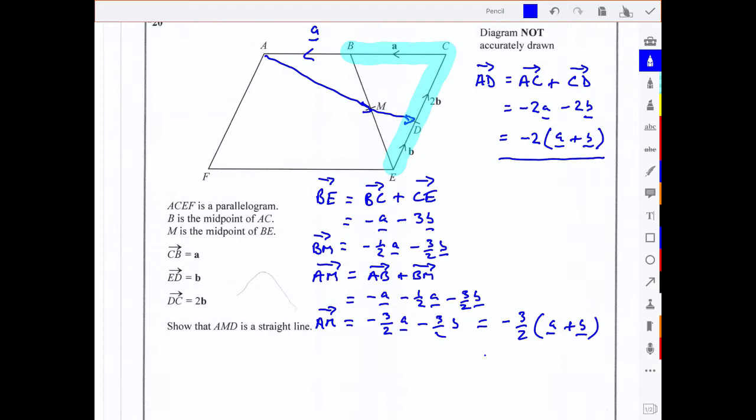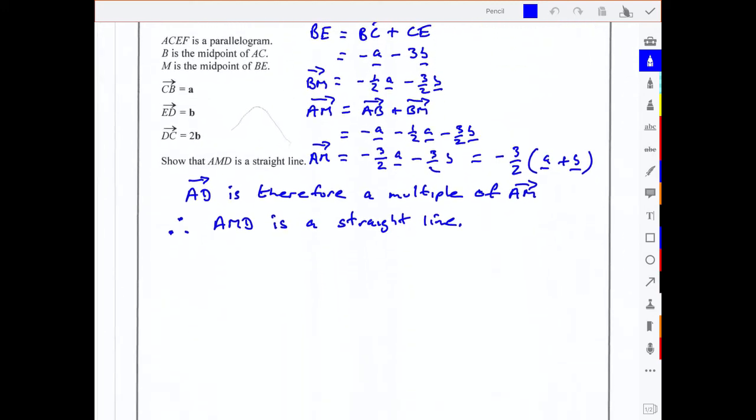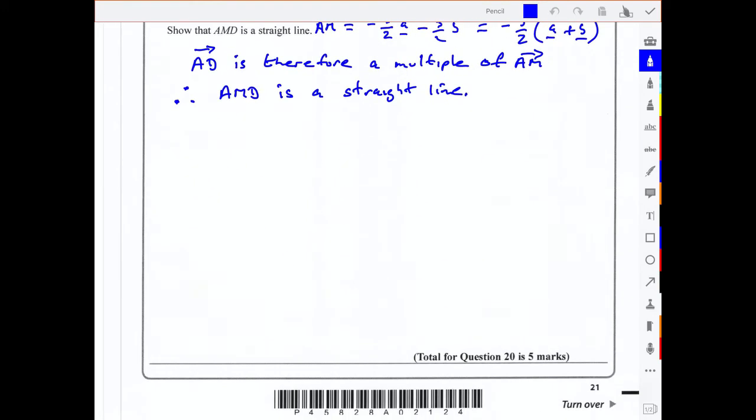So one is a multiple of the other. So I can simply say AD is therefore a multiple of AM. Therefore AMD is a straight line. And that completes the question for five marks.